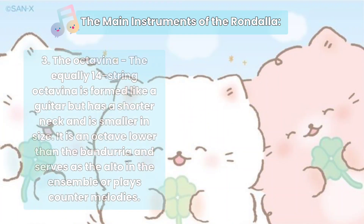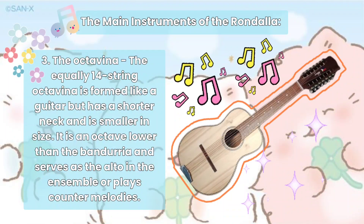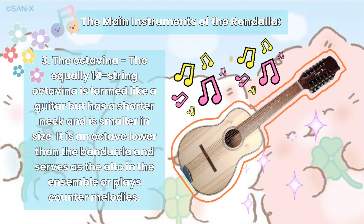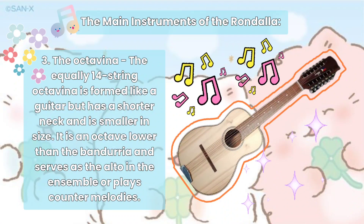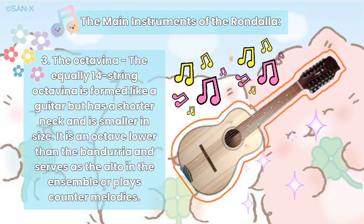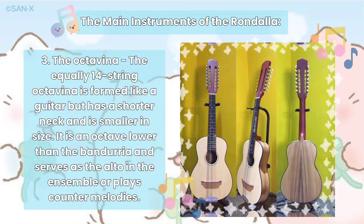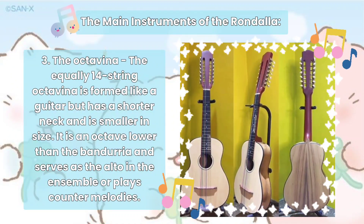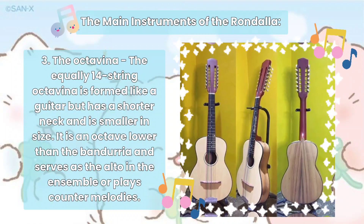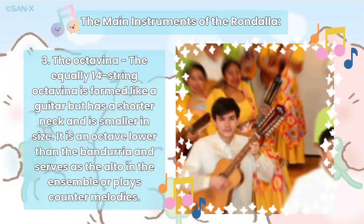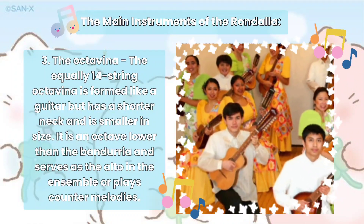The third one is the Octavina. The equally 14-string Octavina is formed like a guitar but has a shorter neck and is smaller in size. It is an octave lower than the Banduria and serves as the alto in the ensemble or plays counter melodies.